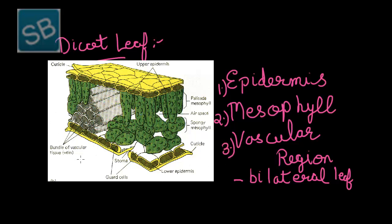The vascular region consists of vascular bundles known as xylem and phloem, which can be seen in the vein and midrib region of the leaf. Here vascular bundles are conjoint, collateral, and closed, meaning cambium is not present. The xylem points towards the upper epidermis; on the contrary, phloem points towards the lower epidermis. Vascular bundles are surrounded by parenchymatous bundle sheath cells.